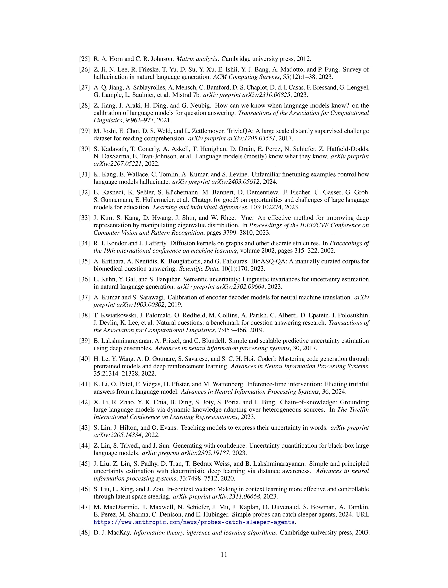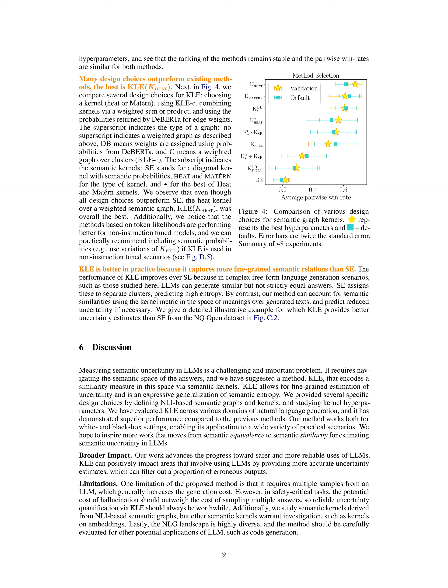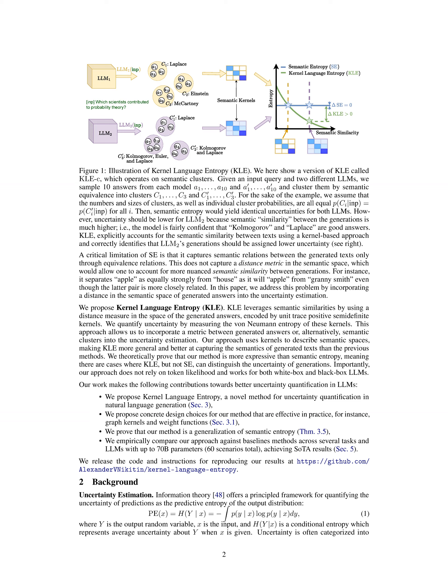Step 9 — Design choices and hyperparameters: The method offers flexibility in design choices, such as combining kernels from various methods and selecting hyperparameters without the need for validation sets. Step 10 — Experimental results: Empirical comparisons against baseline methods across various tasks and LLMs demonstrate that KLE outperforms previous methods, showcasing its effectiveness in quantifying semantic uncertainty in LLM generations.